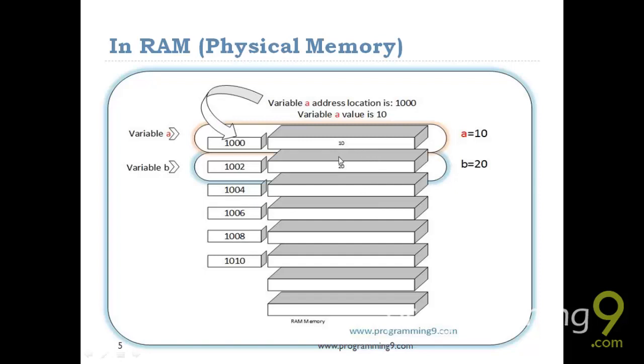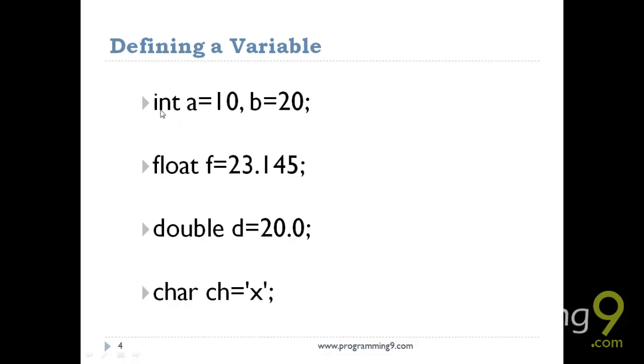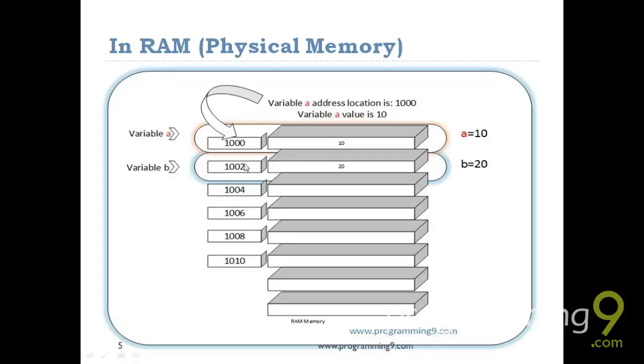Let's see how the variables are stored in physical memory or in the RAM. Let's see the simple example of int i equal to 10, b equal to 20. I have taken these two values and I just wanted to store those two values in memory location. These are the memory locations of the RAM. Just assume each memory location contains two bytes of memory.